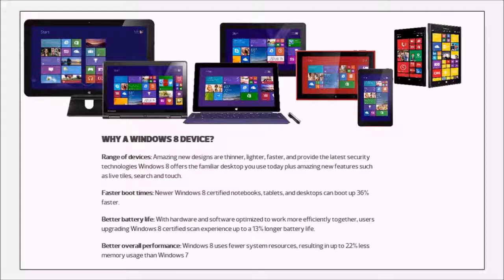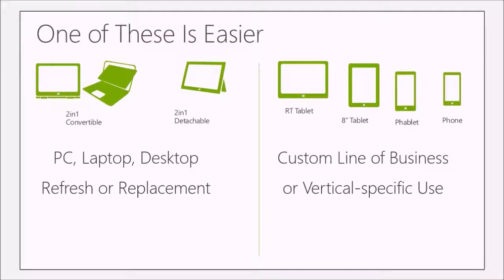We truly think the two-in-one offering is where most enterprise users should be going, though we still see a huge space for the RT tablet, the eight-inch, the phablet, and the phone — specifically in custom line-of-business apps and vertical-specific apps. In enterprise, we're primarily focused on the two-in-one convertible as the ideal device for users who haven't had touch in the past, and as a potential desktop replacement.